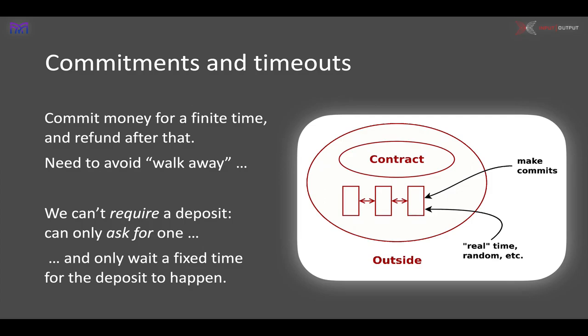In order to ensure the contract keeps progressing, every operation that waits for something from the outside world will only wait a given amount of time. This means we can look at a Marlowe contract and see that it will have something like an event horizon — after a certain amount of time, nothing more can happen in the contract. At that point, we can refund any remaining money to the people who deposited it.